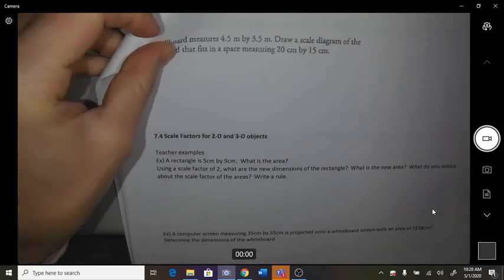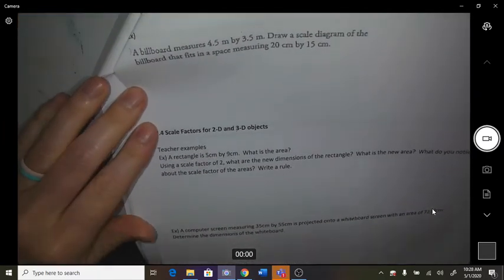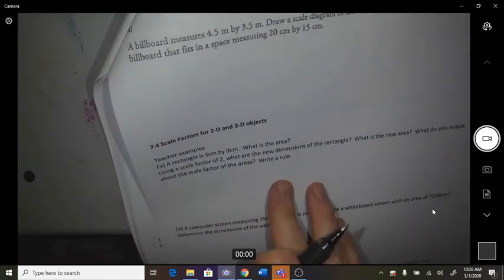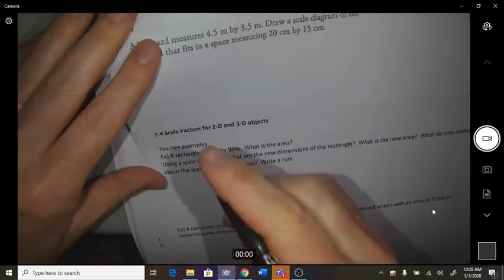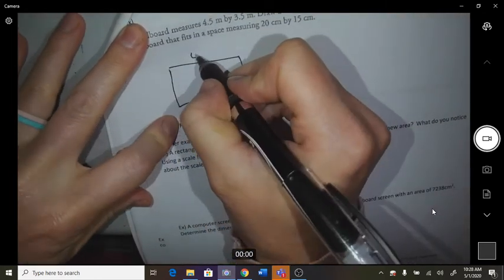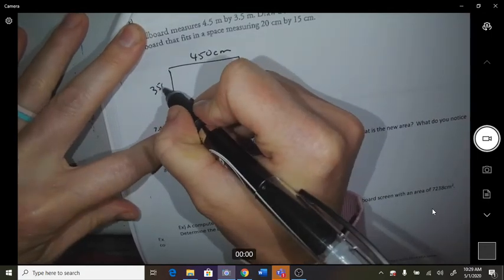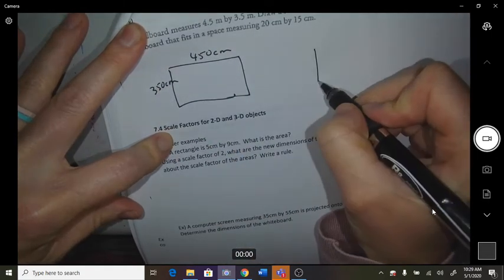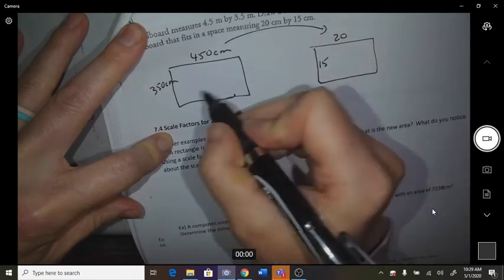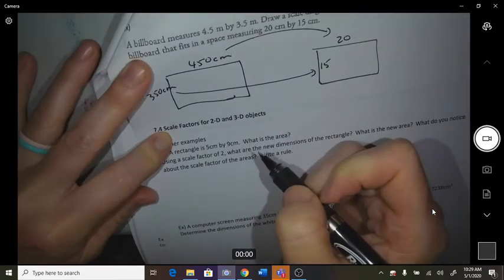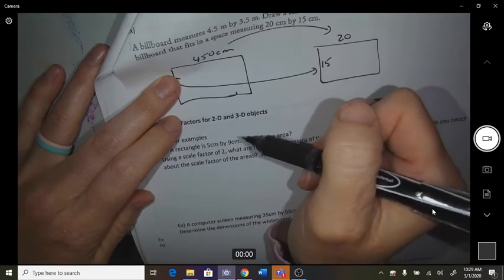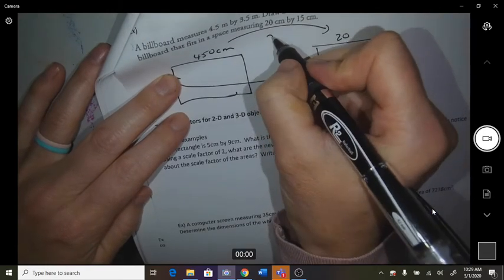A billboard measures 4.5 by 3.5 meters. Draw a scale diagram of a billboard that fits into a space that's 20 centimeters by 15 centimeters. Okay, so this billboard, I'm going to convert this to centimeters. So 450 centimeters by 350 centimeters. And then I got to shrink it so that it's going to fit into a 20 by 15. So what I'm going to do is divide each one. So 450 divided by 20 is 22.5.